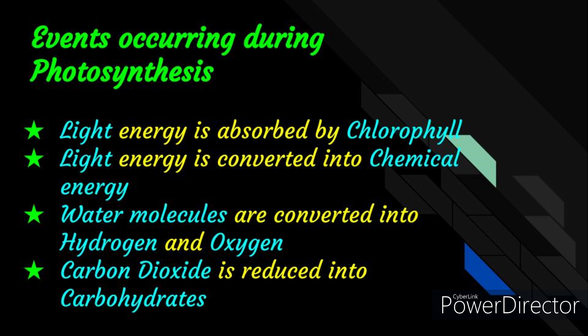Now let us learn the steps involved in photosynthesis. They are: absorption of light energy by chlorophyll; light energy is converted into chemical energy and water molecules are split into hydrogen and oxygen; and carbon dioxide is reduced into carbohydrates. These steps need not take place one after the other immediately. For example, in desert plants, they take in CO2 at night and prepare an intermediate product, and this intermediate product acts upon the energy absorbed by the chlorophyll during the day.